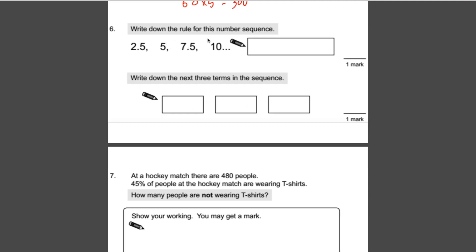Number 6: write down the rule for this number sequence. If you look closely, 2.5 to 5 to 7.5, it's going up by 2.5 every time. So what you need to put in here is plus 2.5. That's the rule we're doing. For the next part, write down the next three terms. So 10 add 2.5 is 12.5. 12.5 add 2.5 is 15. Process of elimination, the next one would be 17.5.